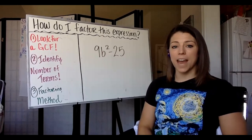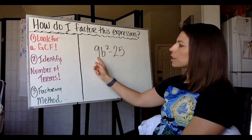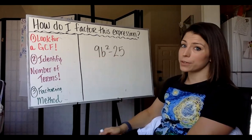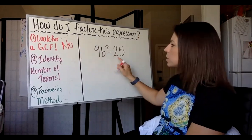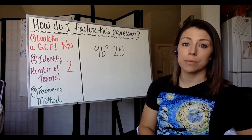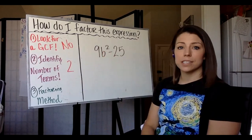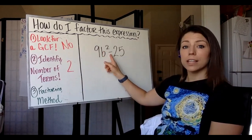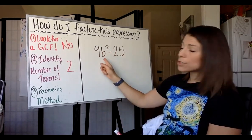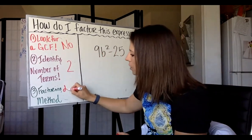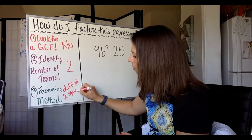Our next example is 9B squared minus 25. Step 1: look for a GCF. The only factors of 9 are 9, 3, and 1, and none of those go into 25, so there is no GCF. There are 2 terms, which means the only factoring method that will work is a difference of two squares — or it can't be factored. It is a difference because it has subtraction, and 9, 25, and B squared are all perfect squares. So yes, we use difference of two squares.